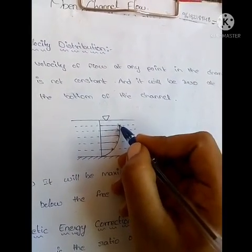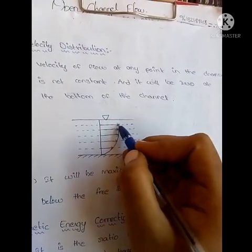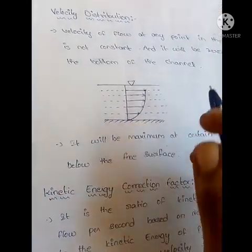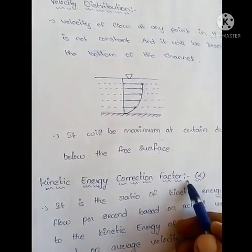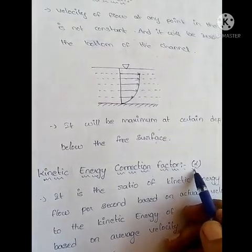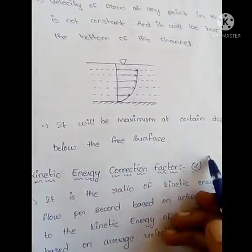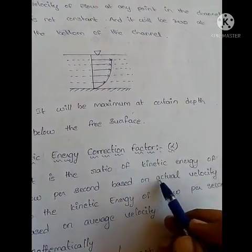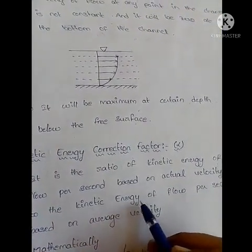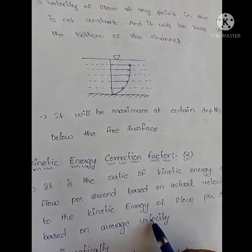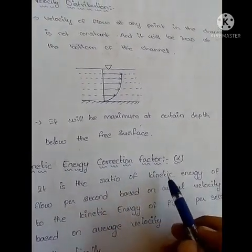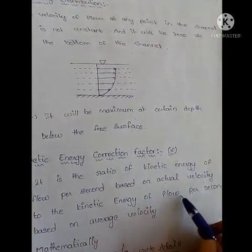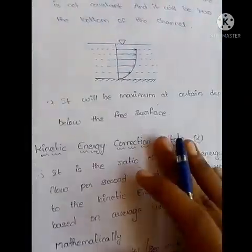Next we come to the kinetic energy correction factor. What is the kinetic energy correction factor? It is the ratio of kinetic energy of flow per second based on actual velocity to the kinetic energy of flow per second based on average velocity. So: kinetic energy per second based on actual velocity divided by kinetic energy of flow per second based on average velocity.